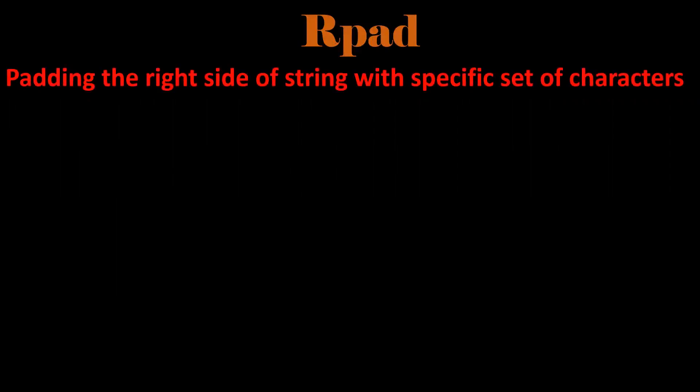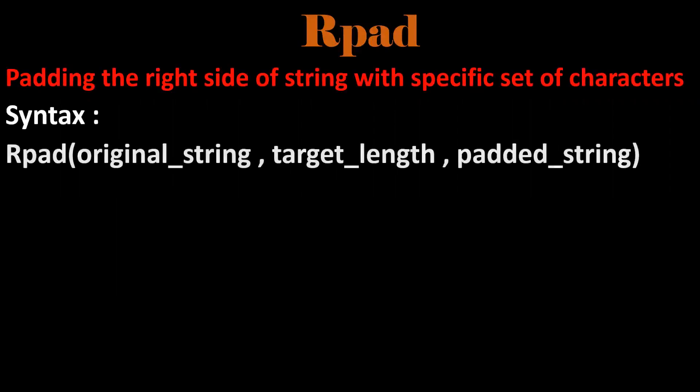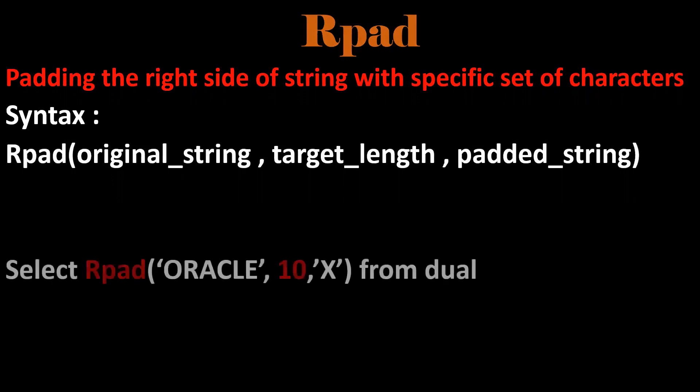In a similar way, RPAD is the function which is used to pad the right side of a string with a specific set of characters. For example, if we have a six-character string and we need the target length to be 10 characters, and it doesn't match, we pad 'X' on the right side.